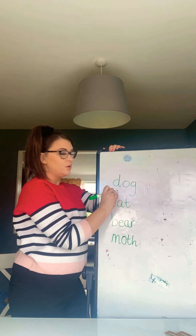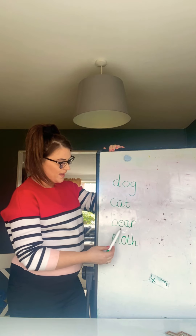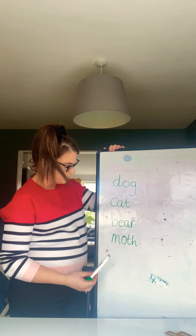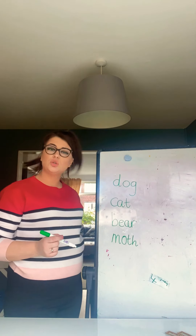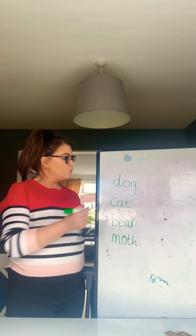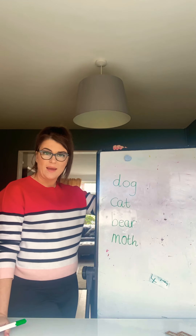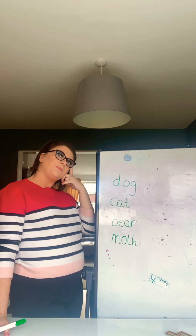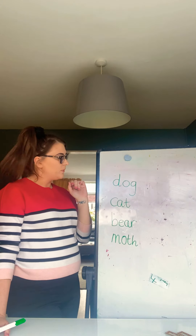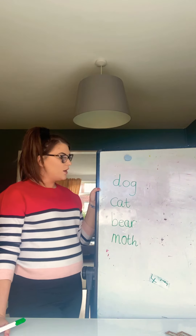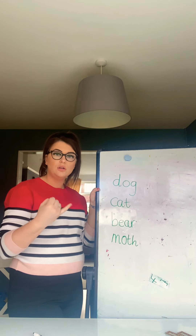D-O-G. Dog. C-A-T. Cat. B-A-R. Bear. M-O-T-H. Moth. So I've got a list of some of the animals from the story. Your task today is to think of some words that rhyme with these words and write them in a list. Dog — can you think of some words that rhyme with dog? I thought of the word log. Dog and log. Three red fingers because it's got three sounds: L-O-G.